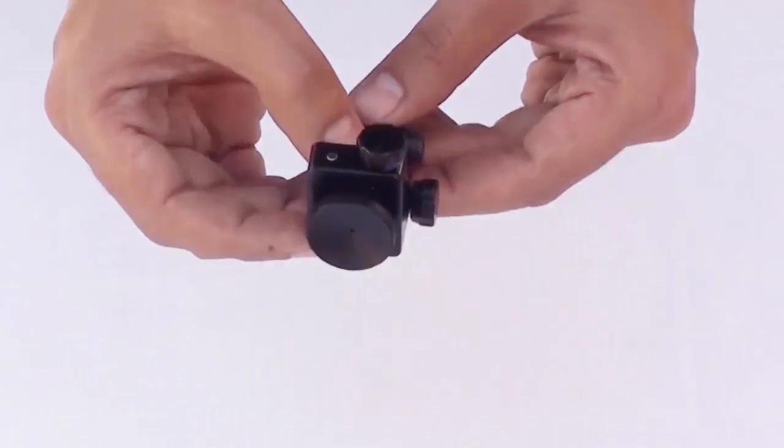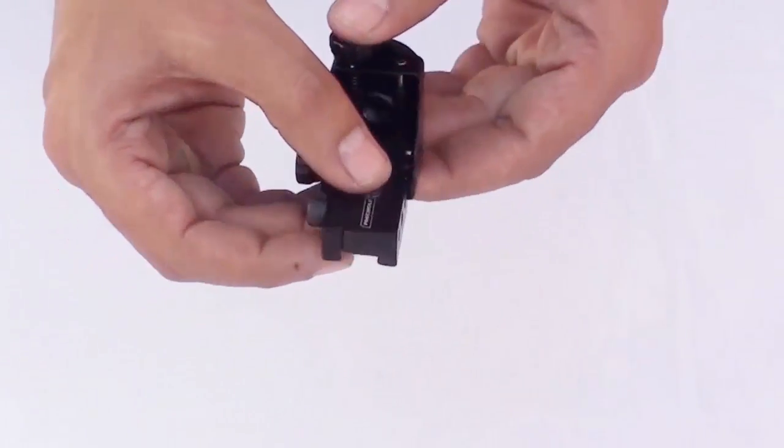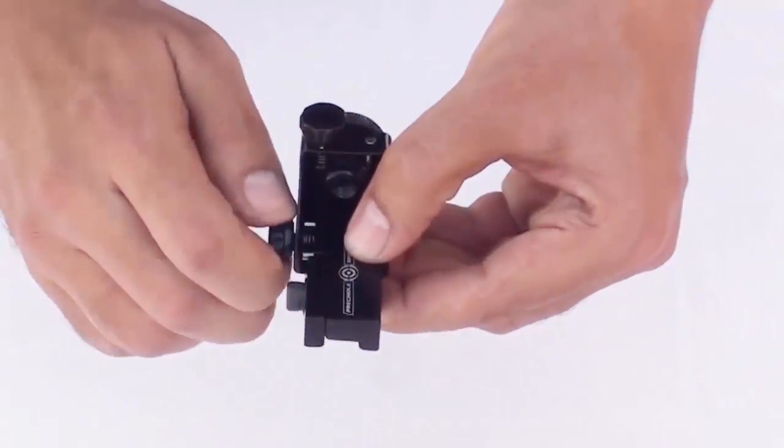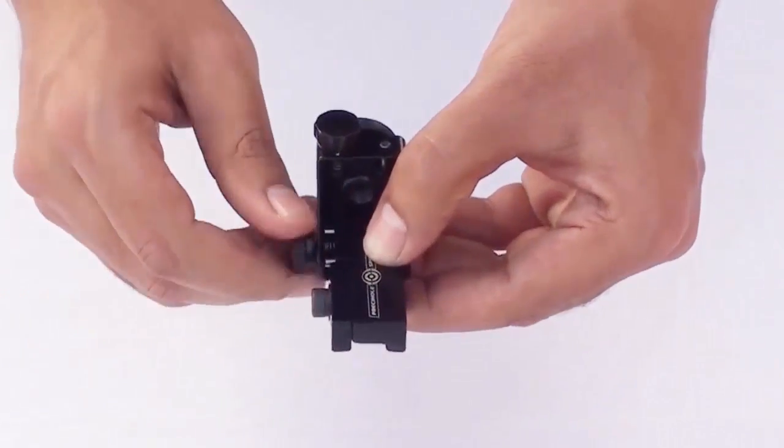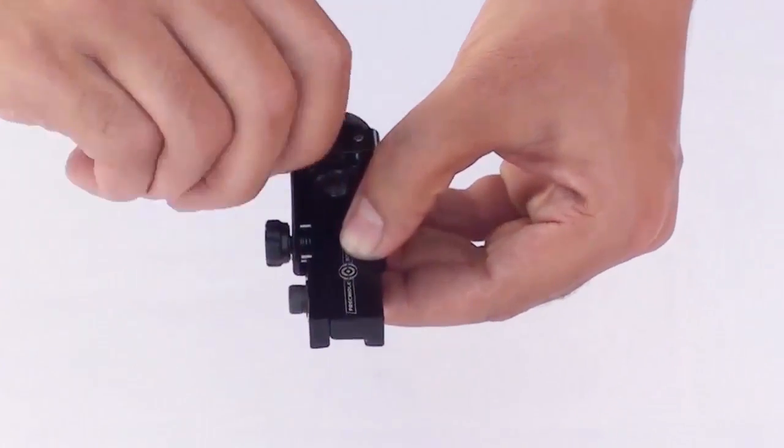This is the rear PeepSight. The windage and elevation can be adjusted using the knobs as shown.